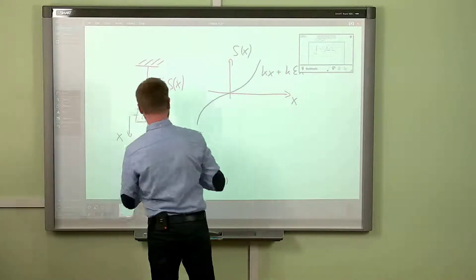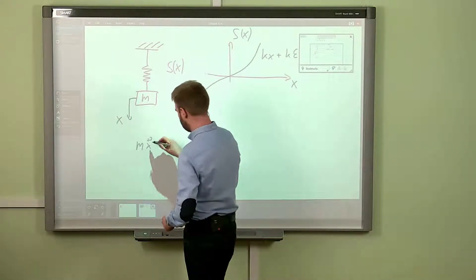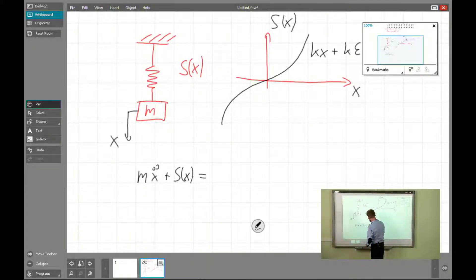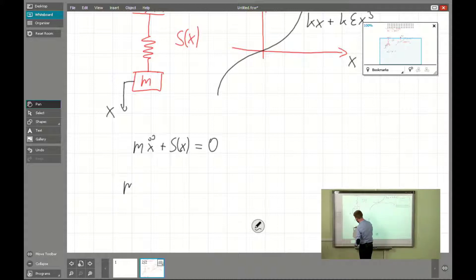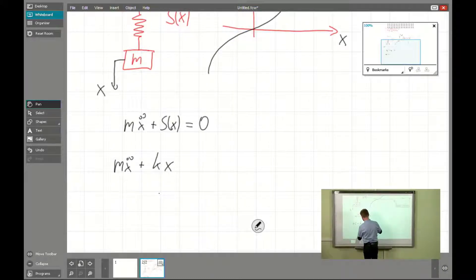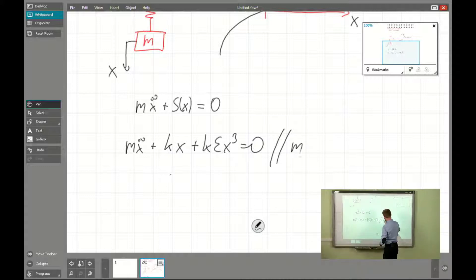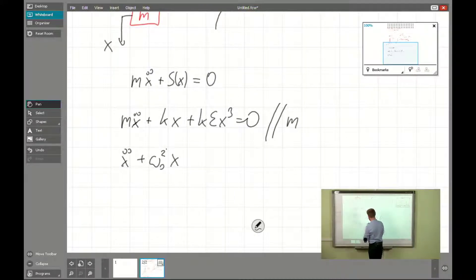If we assume some coordinate frame x, we see that the governing equation is as follows. We have m times acceleration plus s of x equals zero. If we put in the exact values of the characteristic components and divide everything by the mass, we get: omega zero squared — which is k over m — times x, plus omega zero squared times epsilon times x cubed equals zero.